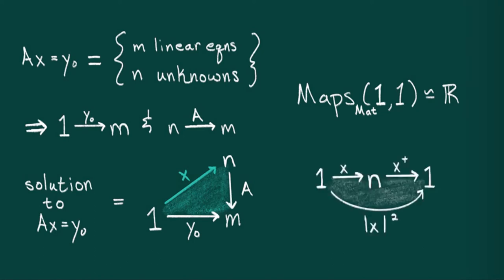Given a column vector x, I can consider x transpose, which is a row vector or a map from n to 1. As they are compatible, I can consider their composition, which is a map from 1 to 1, i.e. a number, which turns out to be the norm of x.